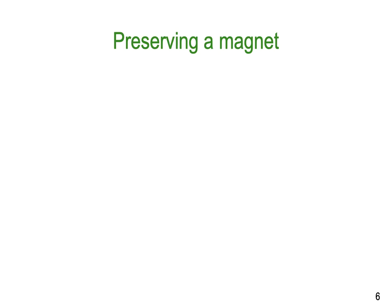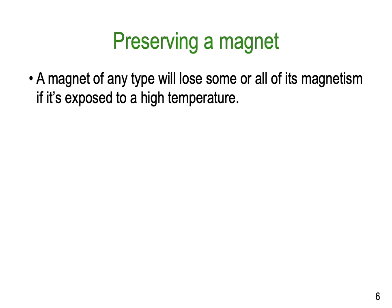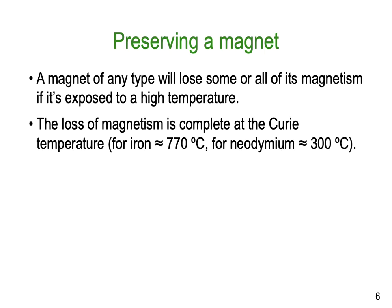How do we preserve magnets? A magnet of any type will lose some or all of its magnetism if exposed to high temperature, because heat mixes up all the molecules so they're no longer aligned. The loss of magnetism is complete at a Curie temperature of about 770°C, but for neodymium you only need to reach 300°C. In either case, all you're doing is releasing the molecules from being lined up and they float around anywhere — you no longer have a magnet.